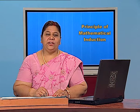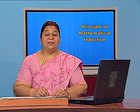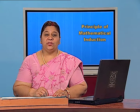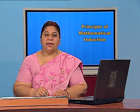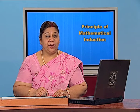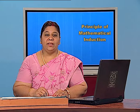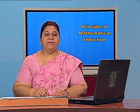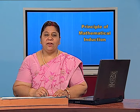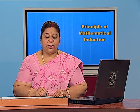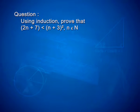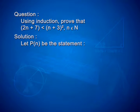Students, you must have enjoyed the questions we have solved till now, and you will find in your textbook similar questions based on some of the series, inequality, divisibility and exponents. I am sure you will be able to solve them. Now we have one more example involving inequality: using induction, prove that 2n plus 7 is less than n plus 3 whole square, for every n belonging to N. Let p(n) be the statement: 2n plus 7 less than n plus 3 whole square.